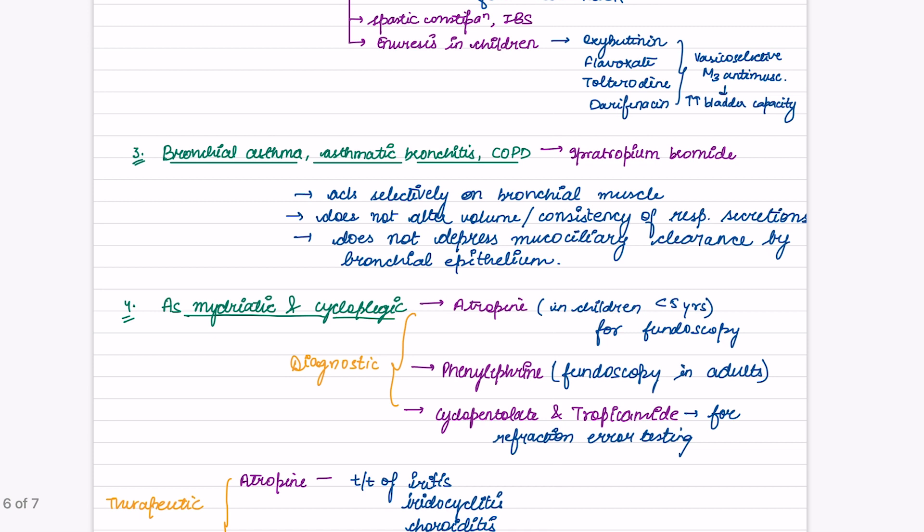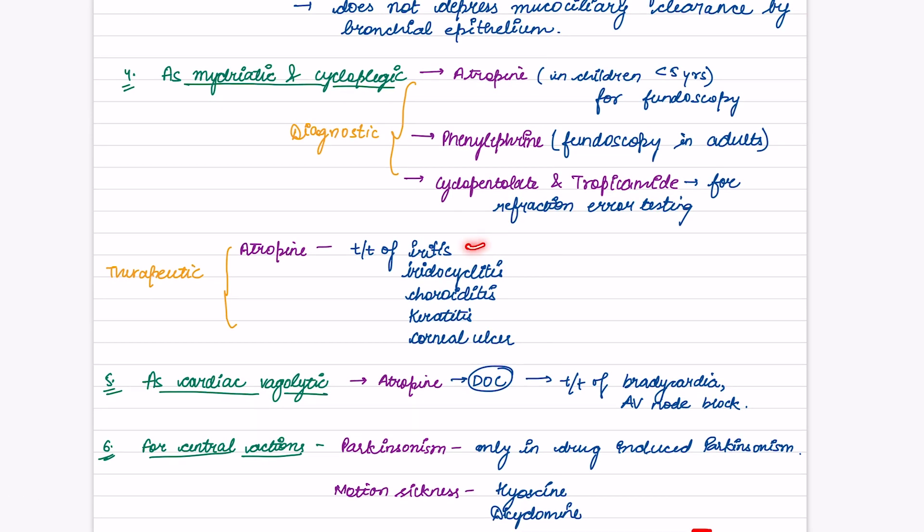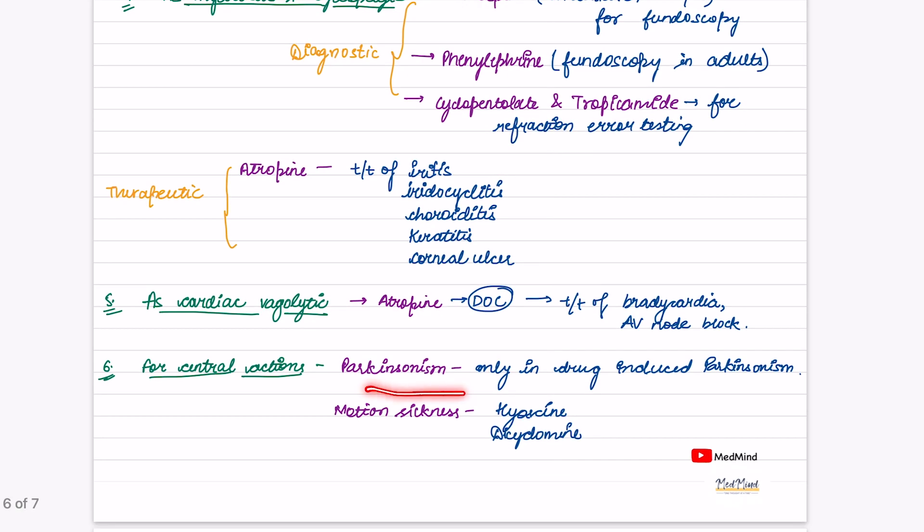As mydriatic and cycloplegic: for diagnostic purposes, atropine is used in children less than 5 years for fundoscopy. Phenylephrine for fundoscopy in adults. Cyclopentolate and tropicamide for refraction error testing. Therapeutic use is atropine for treatment of iridocyclitis, choroiditis, keratitis, and corneal ulcer. As cardiac vagolytic, atropine is the drug of choice for treatment of bradycardia and AV nodal block. For central actions: Parkinsonism, only in drug-induced Parkinsonism. For motion sickness, we have hyoscine and dicyclomine.